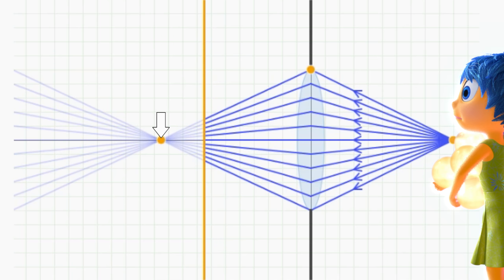And where the light rays actually hit the image plane, they're spread out in larger circles instead of tiny points. This results in an image of Joy which is out of focus.